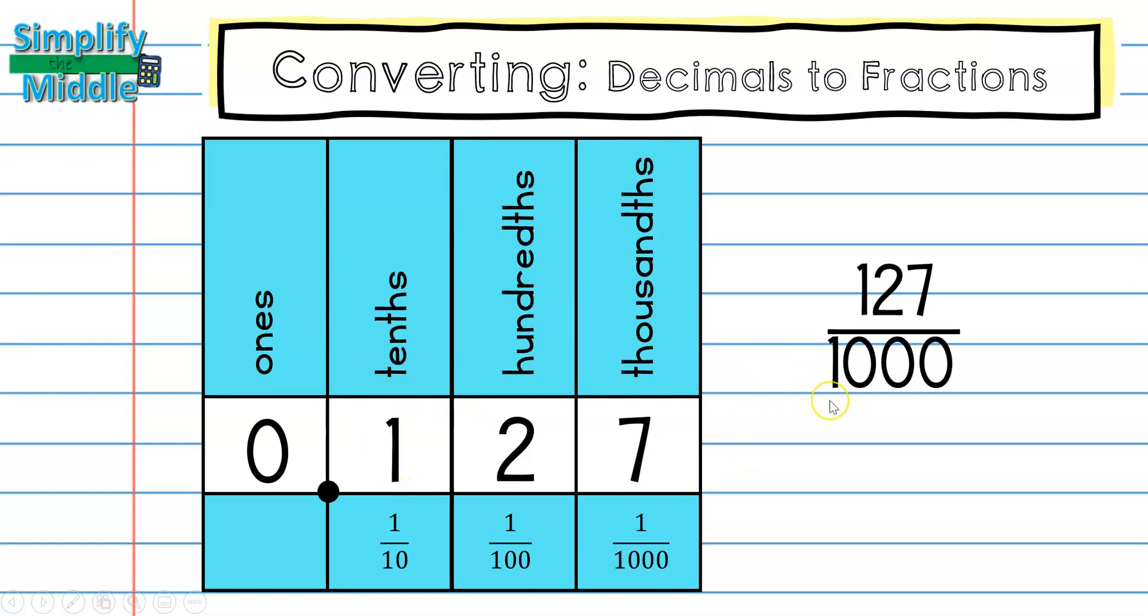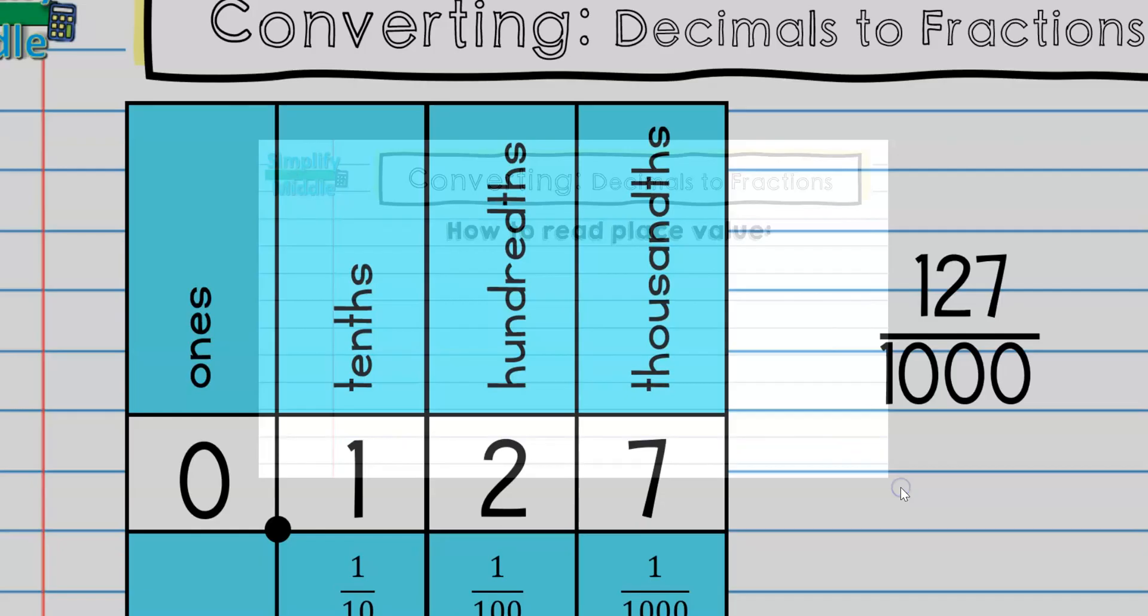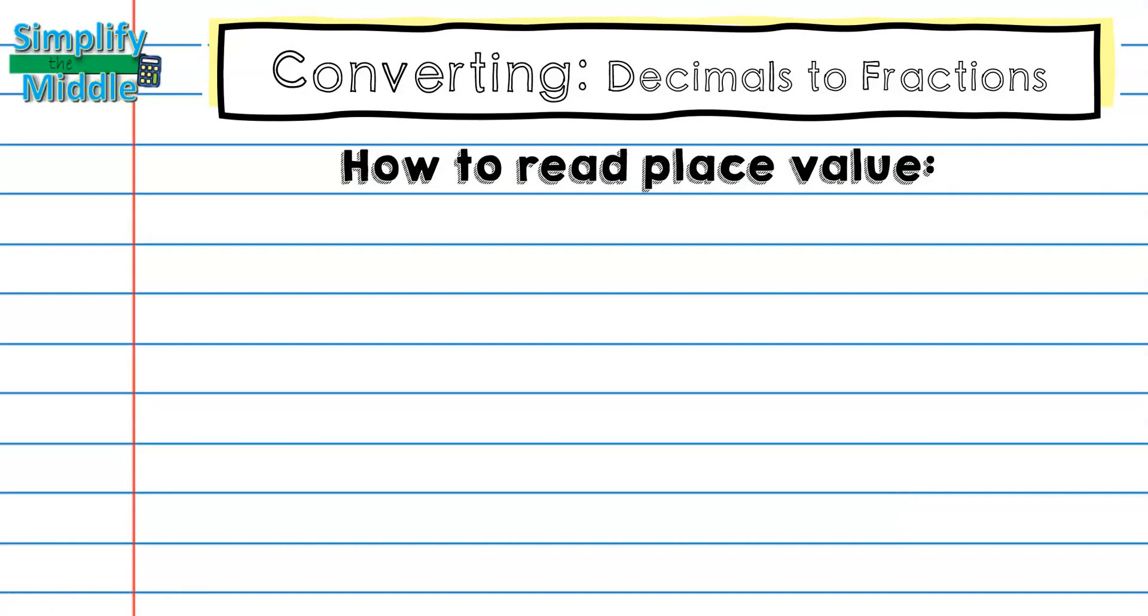And then at the end I read the place value, thousandths. So this is 127 thousandths. This is important in knowing how to convert decimals to fractions. So let's practice reading place value.